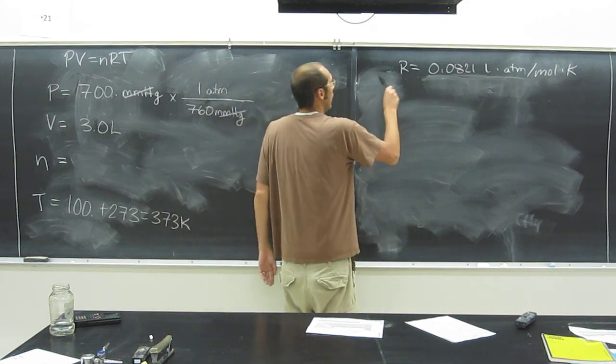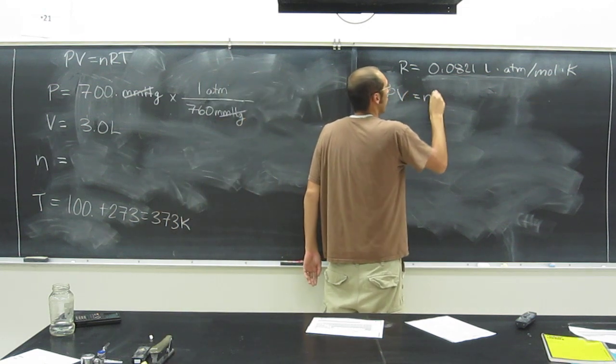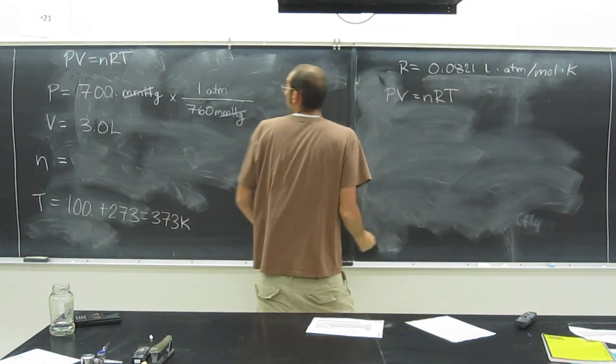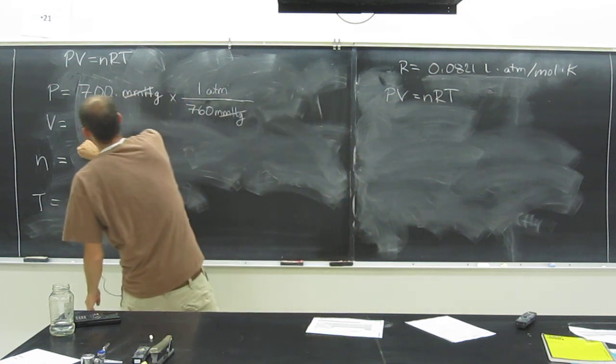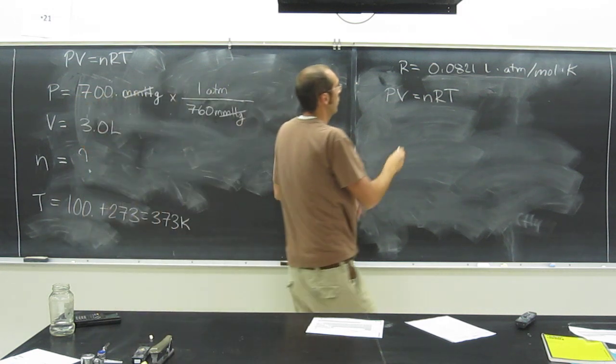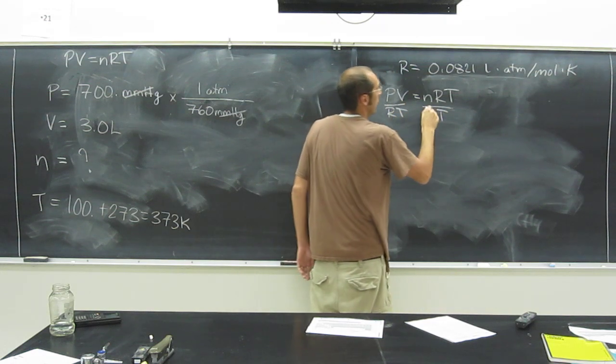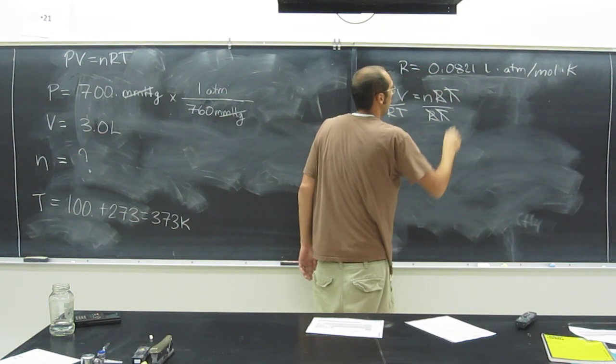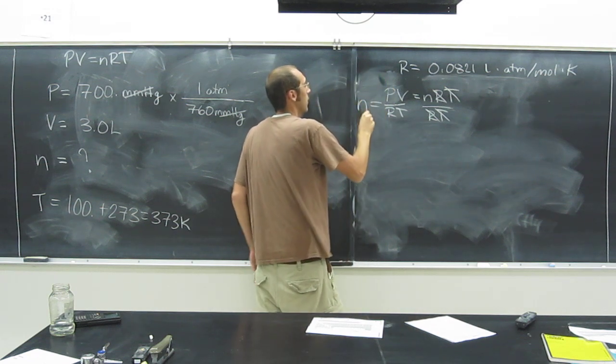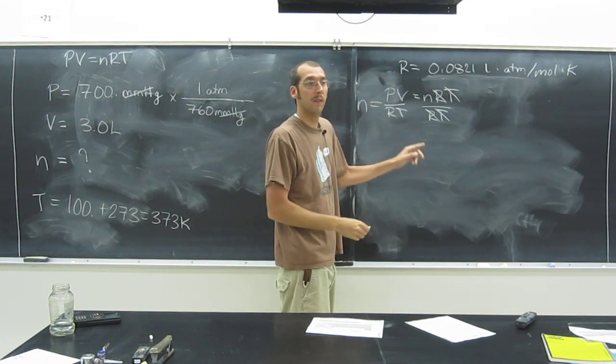Let's take that. PV equals NRT, and what are we looking for? N, right? So, isolate N, divide both sides by RT, cancel. So, our new equation is N equals PV over RT.